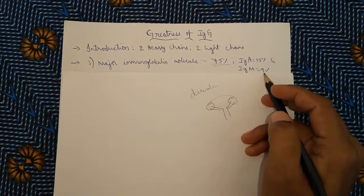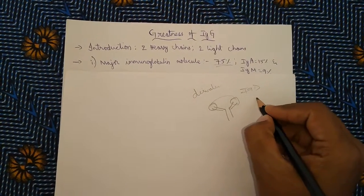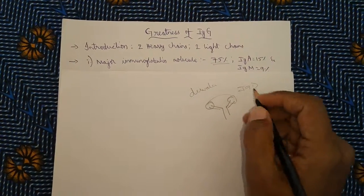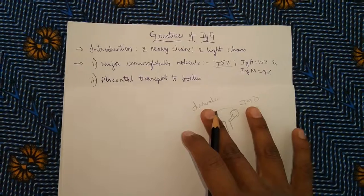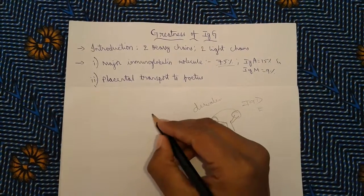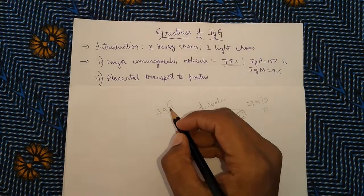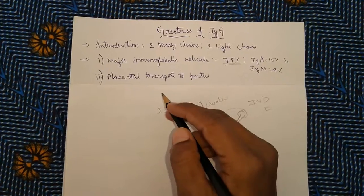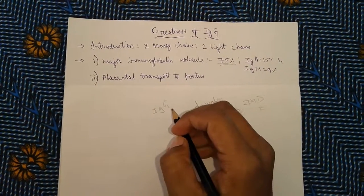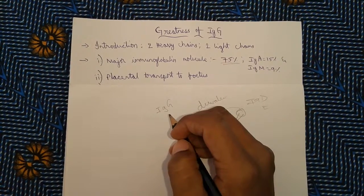The second property is placental transport to fetus. IgG has the only potential to enter the fetus. What is the use of placental transport to fetus? It can give immunity to the fetus and ability to fight against the pathogens, and thus it increases the innate immunity of the baby.